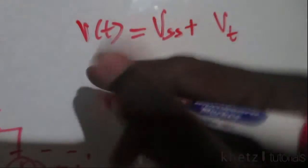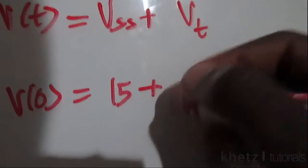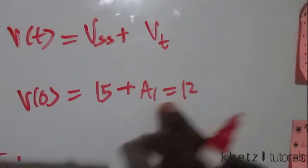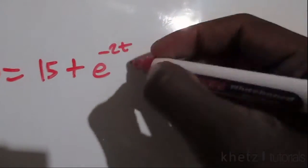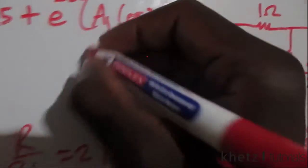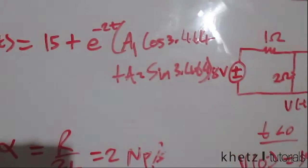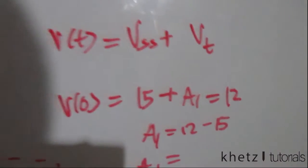Applying the first initial condition v(0) = 12 volts: substituting t = 0 gives 15 + A1 = 12, therefore A1 = 12 − 15 = −3.